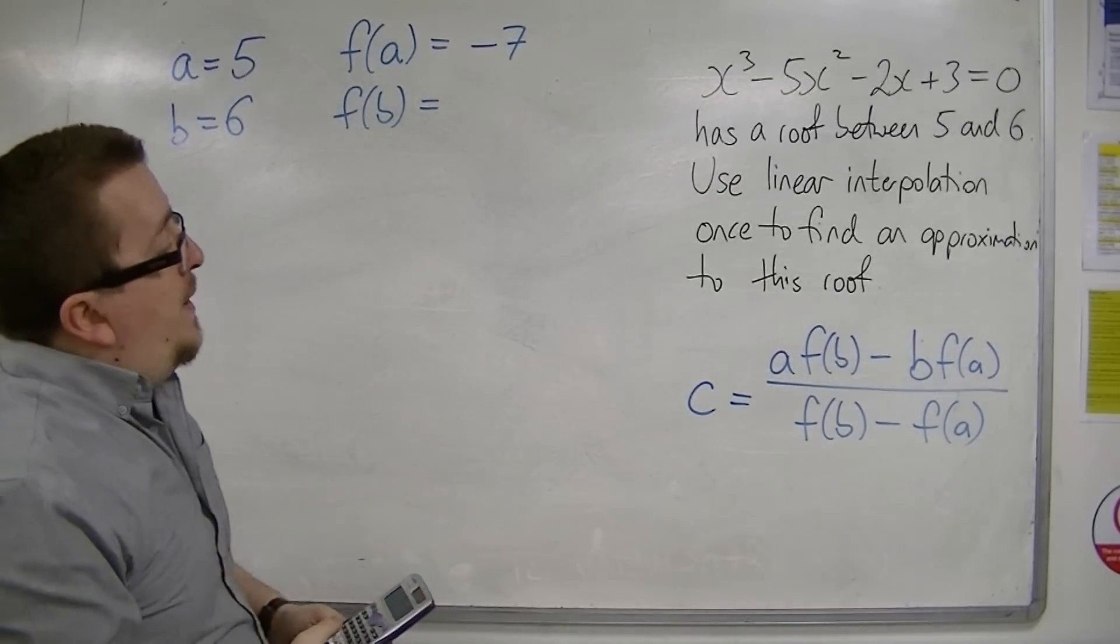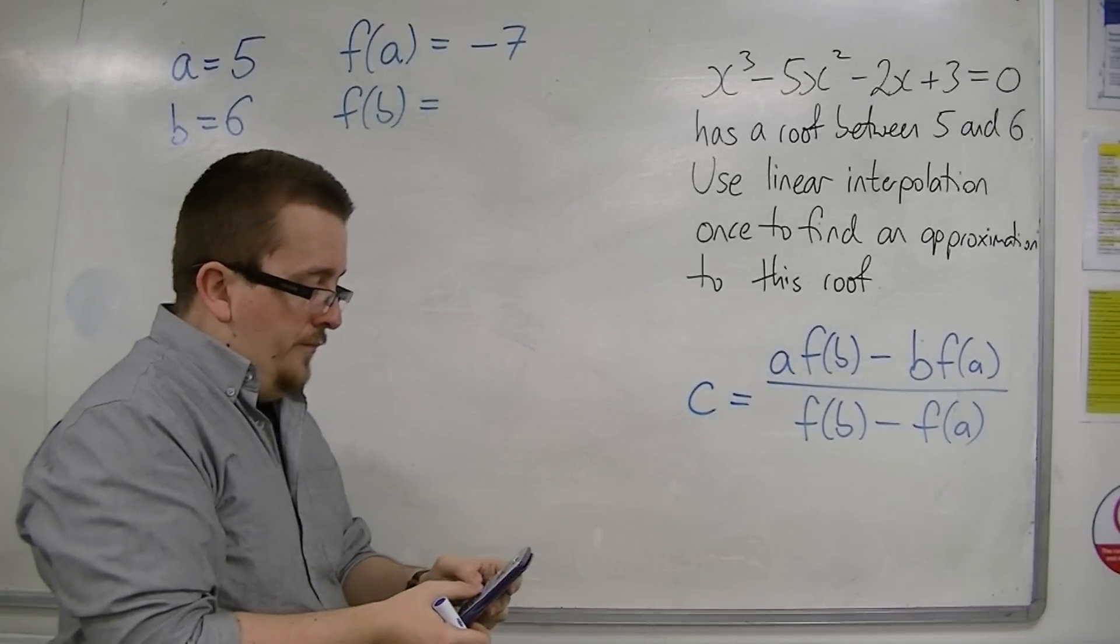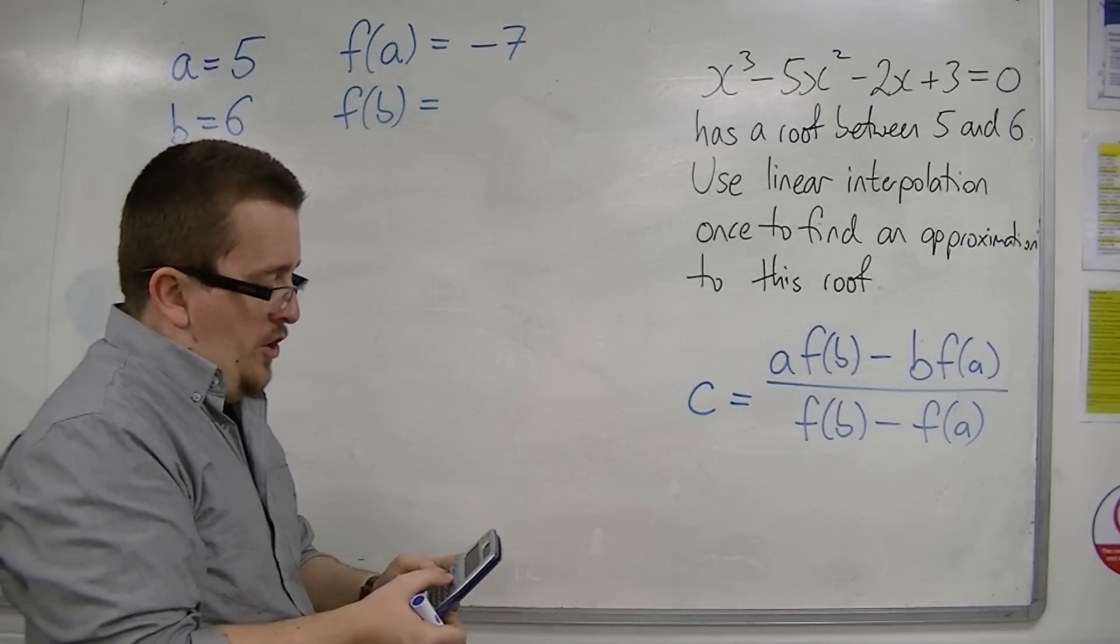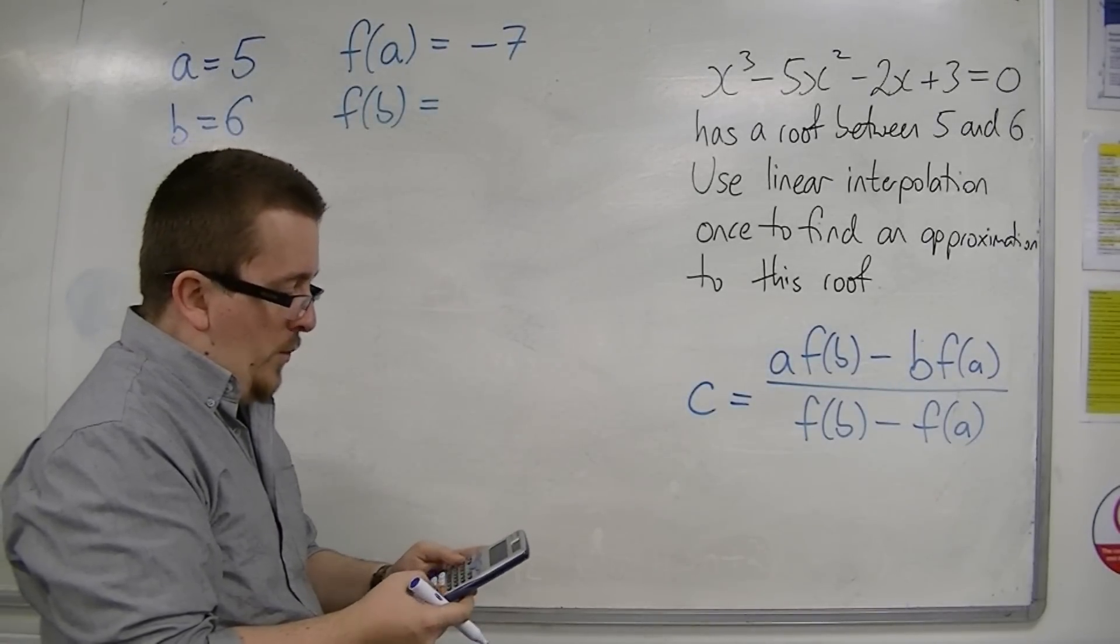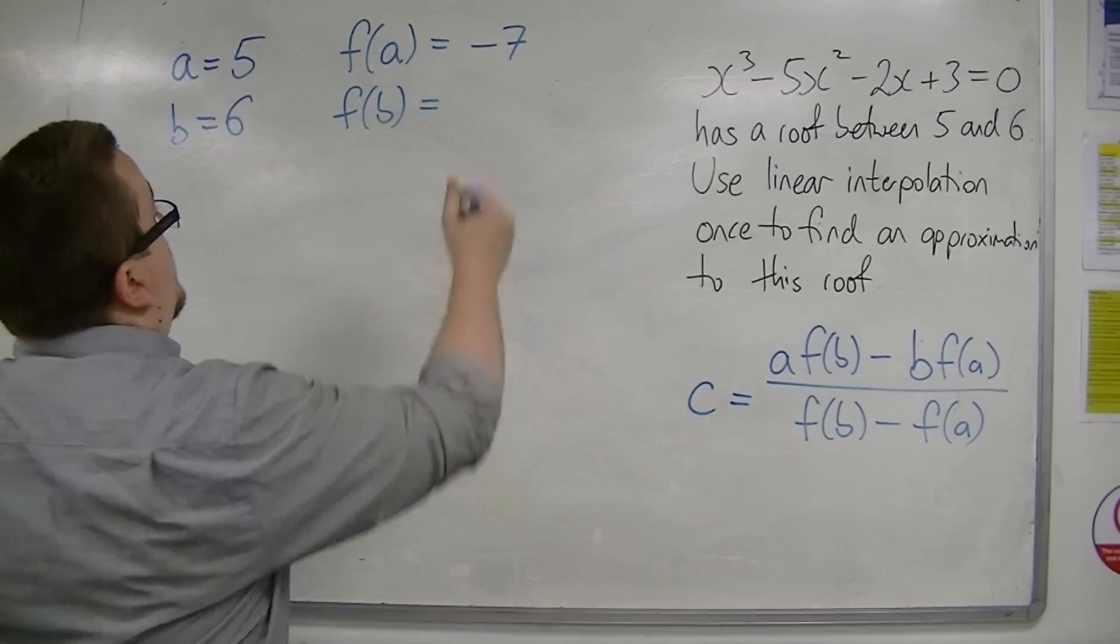And f of b is substituting in 6, so 6 cubed take away 5 times 6 squared take away 2 times 6 plus 3 is 27.